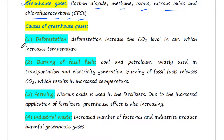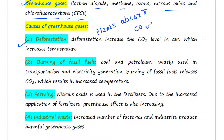The first cause is deforestation. We know that plants absorb CO2 during photosynthesis. Cutting of trees and deforestation increases the CO2 level in air, which eventually increases temperature.